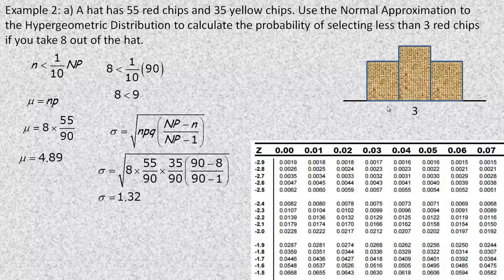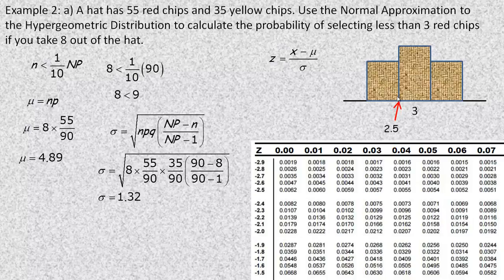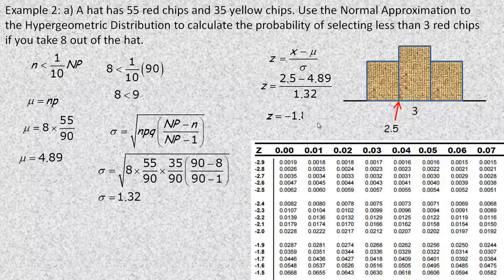For the probability of less than 3 red chips, with the continuity correction the cutoff point is 2.5 (the bottom of the bar for 3). We find the z-score: (2.5 − 4.89) / 1.32 = −1.81. Looking up −1.81 in the table gives a probability of about 3.5%.